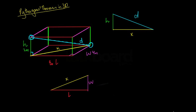Hey guys, so in this video we're going to be having a look at Pythagoras Theorem in 3D. I've looked at Pythagoras Theorem in 2D, and that said that the square of our hypotenuse was equal to the sum of the squares of the other two sides, the hypotenuse being the longest side. So that was in 2D.